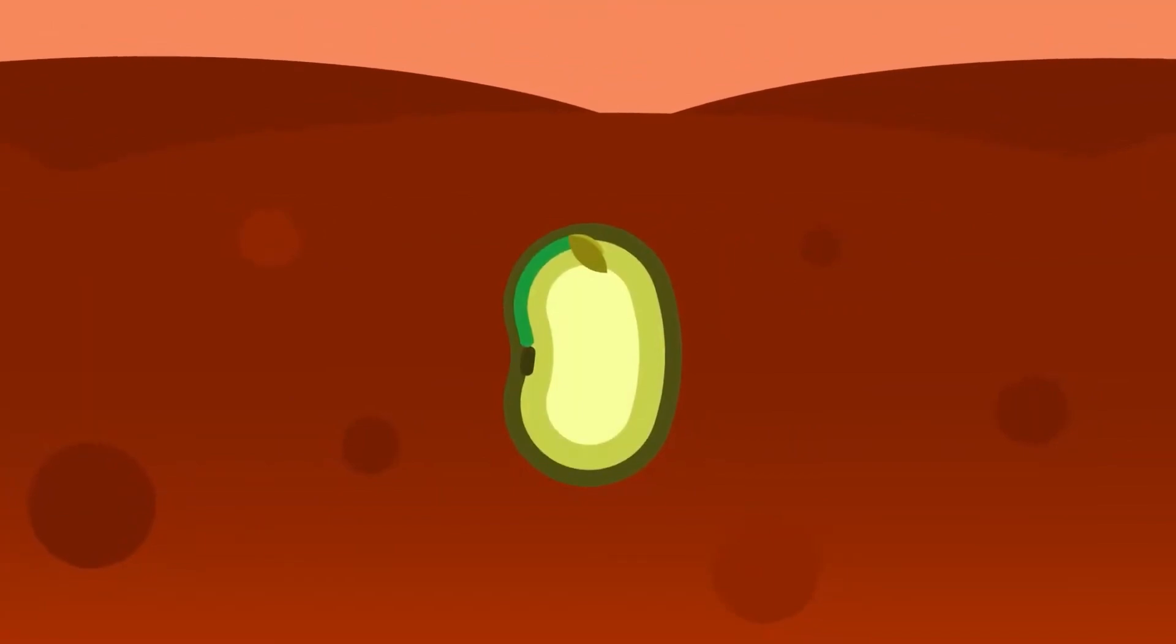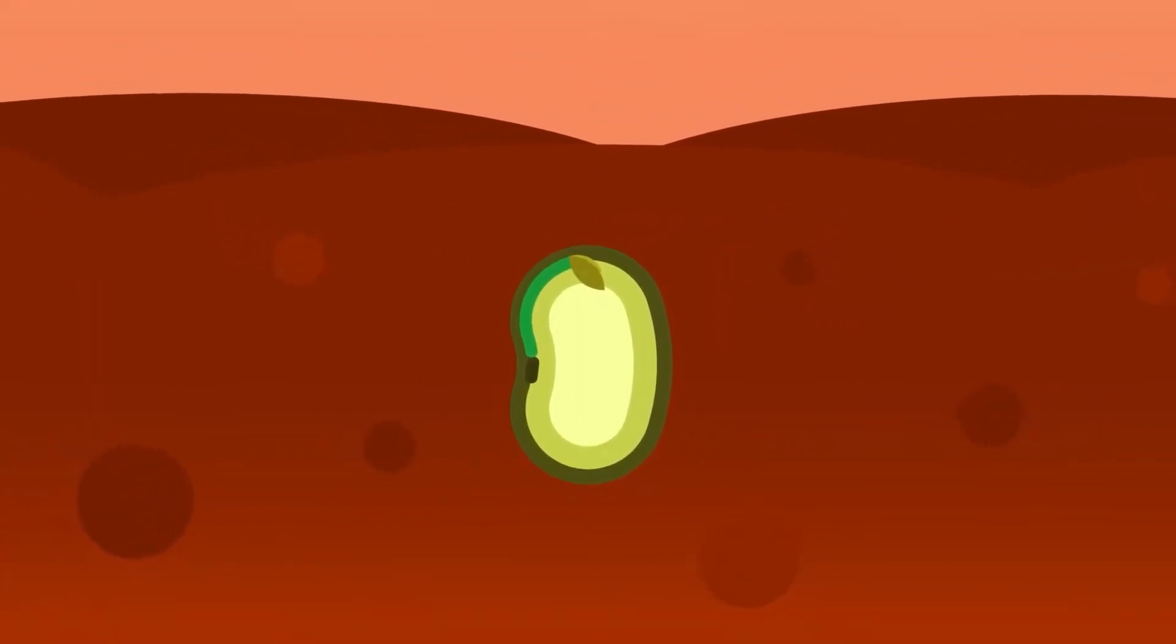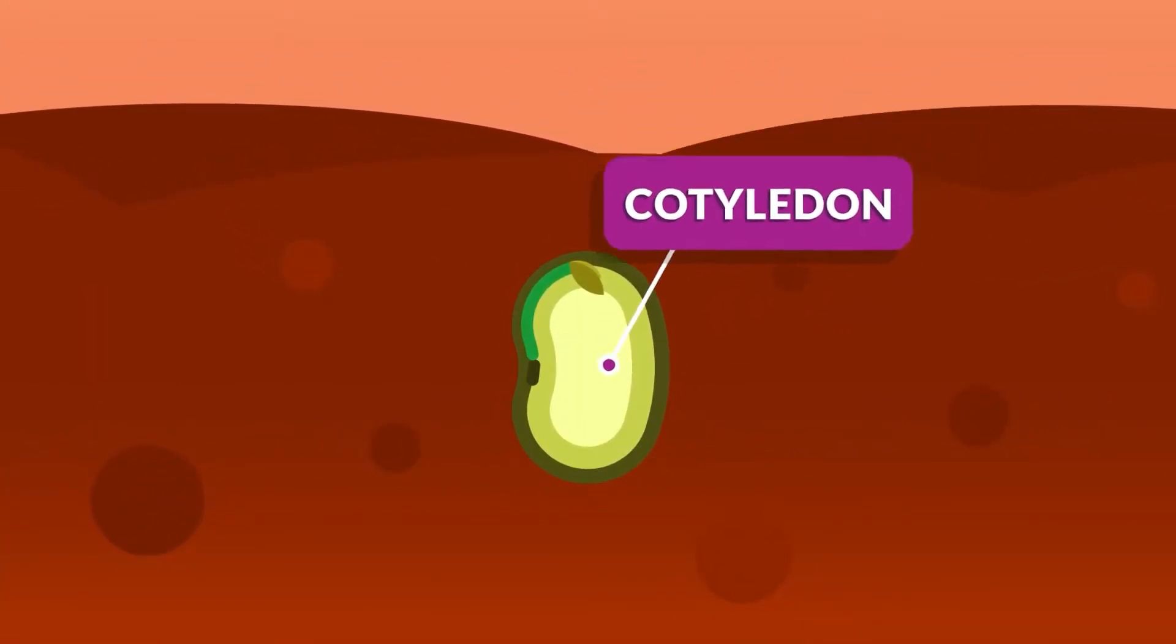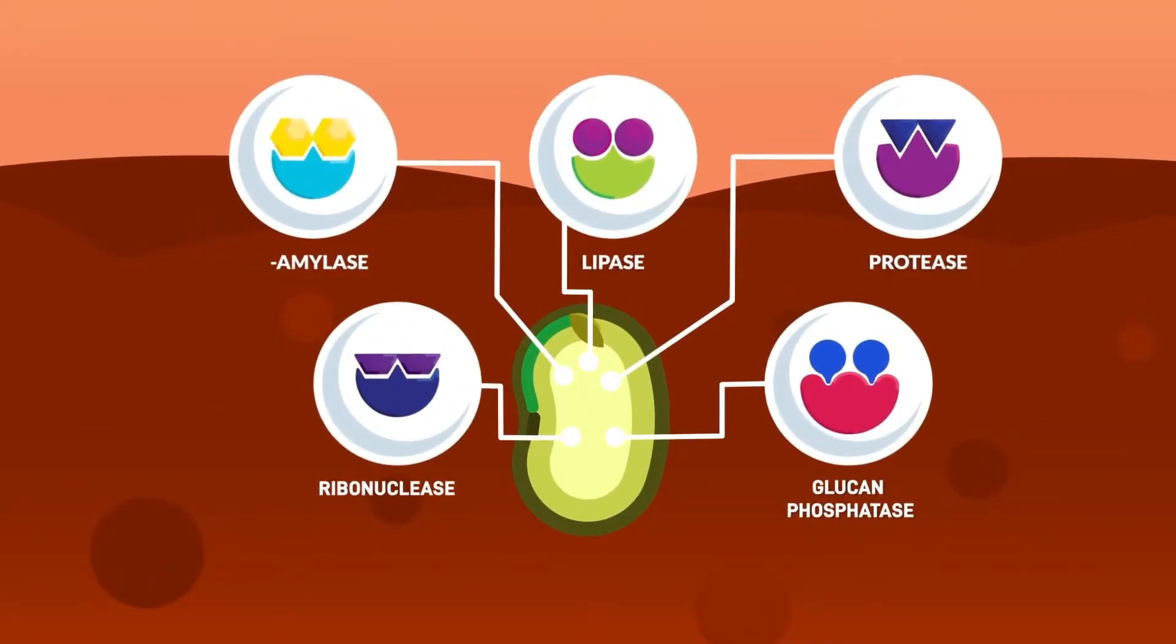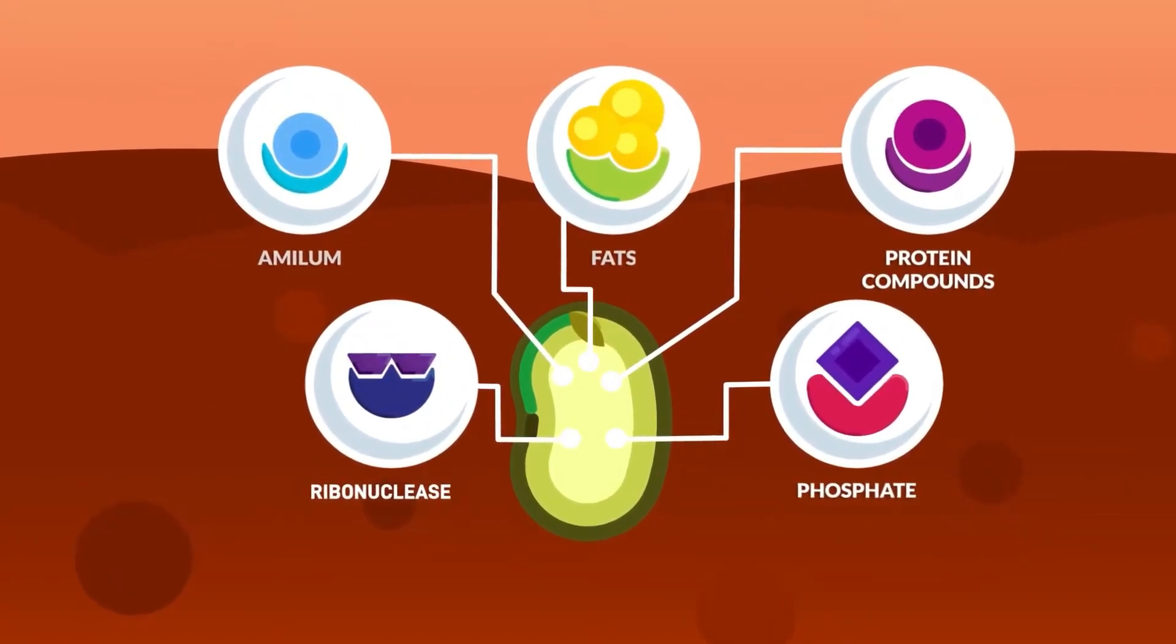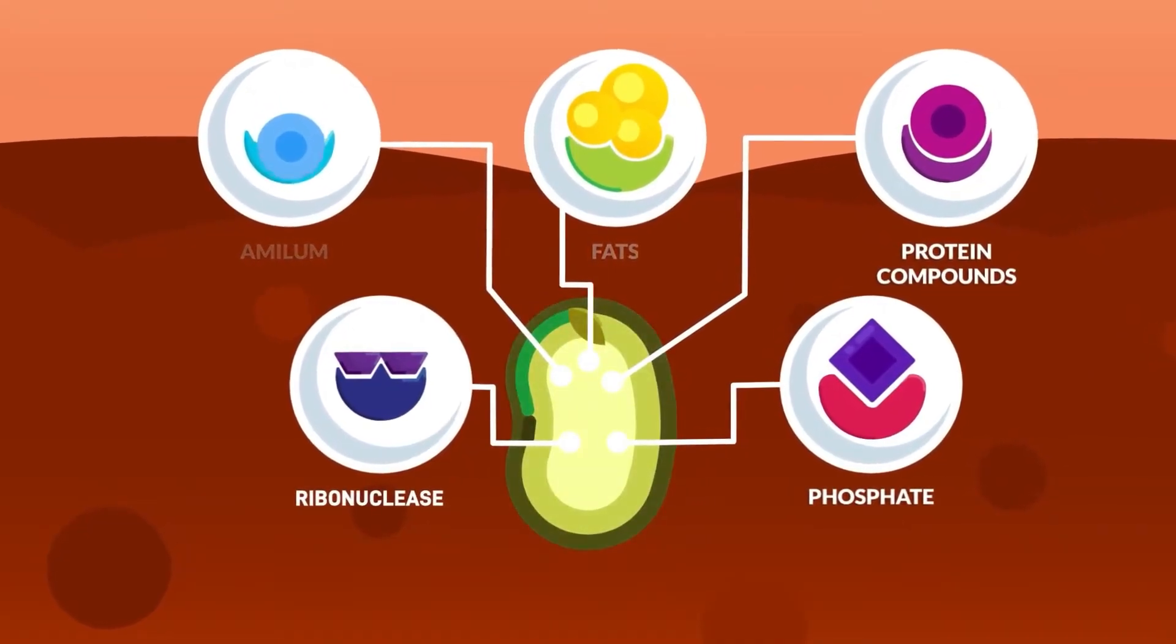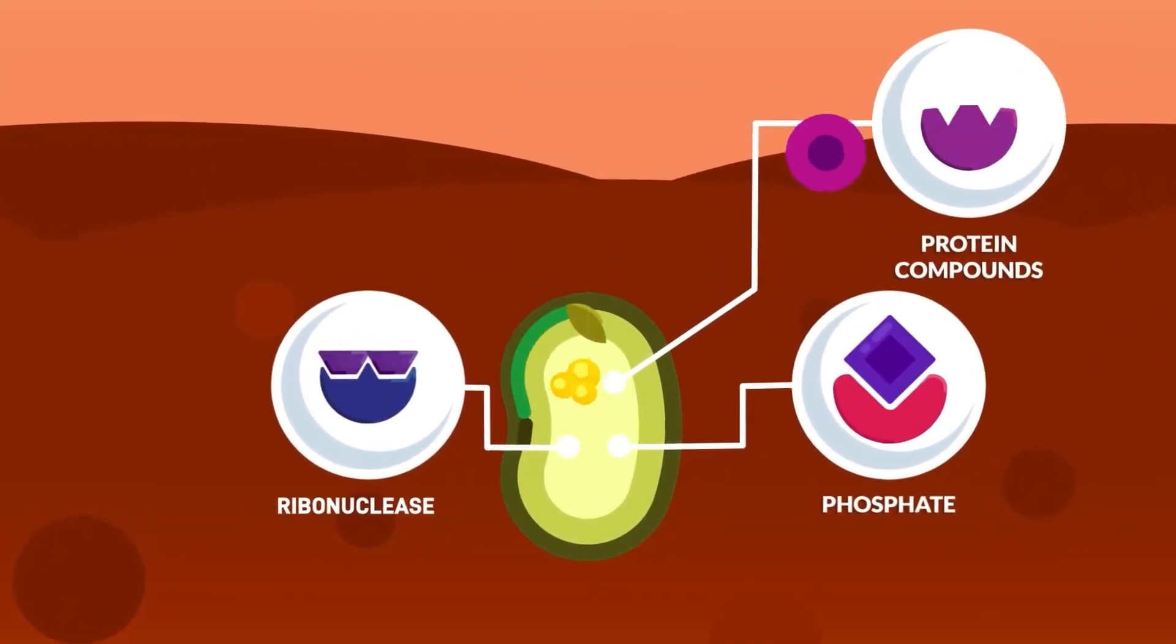In non-endospermic seeds, the digestion of the stored foods occurs within the cotyledons. It is processed by the enzymes. In each case, the stored food is digested and the soluble end products of digestion are transported to the growing regions of the embryo.